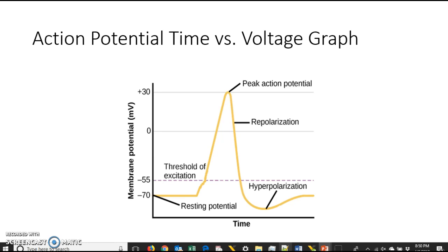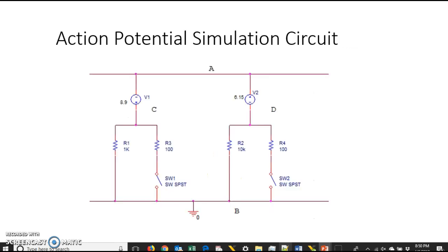Alright, so let's move along now, because the most important part of this video is to help you understand how to connect the actual circuit so that we can simulate this phenomena. On the screen you'll see a circuit that we're going to use for the lab. In this circuit, you'll notice that we have two different channels. In this channel we have an 8.9 volt voltage source and we have two resistors here, and we have a single pole single throw switch. That's what the SPST actually stands for.